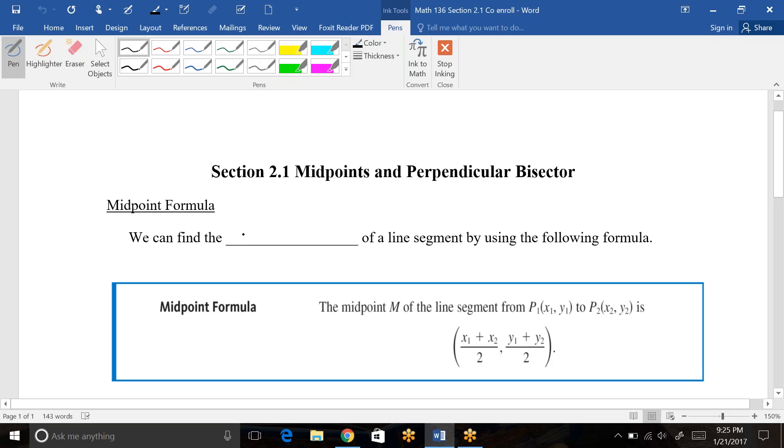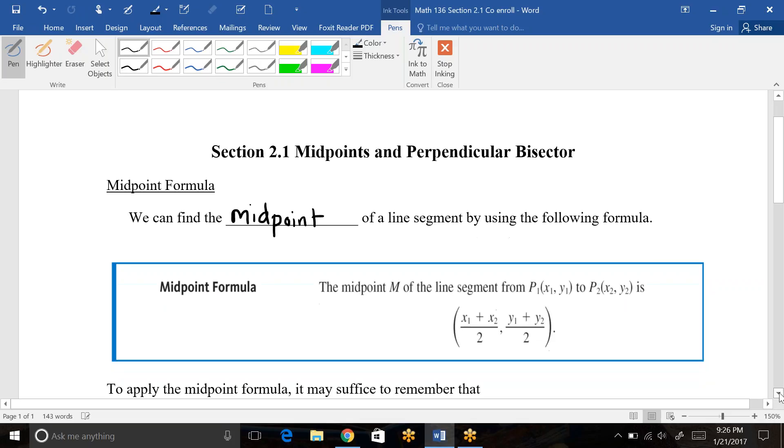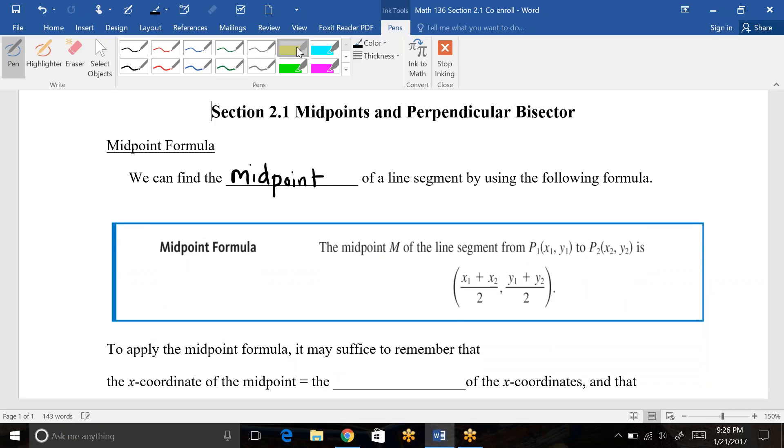We can find the midpoint, which is the center of a line segment, by using the following formula. This formula does need to be memorized. It's a pretty simple basic formula, but we want to make sure that you know it. To find the midpoint, you take the two ordered pairs, you add their x's together and then you average it, which means you cut it in half, and then you add the y's together and you cut that in half. So in other words, you just take an average of the x's and an average of the y's.